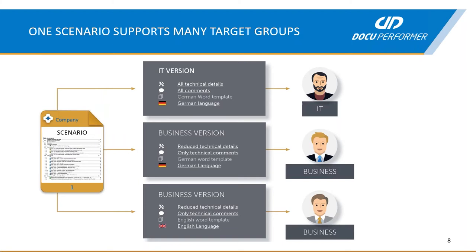You can set certain export settings when creating a documentation. For example, you can choose settings variants to control the extent of technical details of the objects in the scenario. You can also use comment variants to control which comments are considered — for example, comments relevant for business or for IT people. An additional setting is the language setting, since some end users might only understand the documentation in English. Finally, you also select the export source — the system you would like to document — whether it's the test system, development system, or the productive system.